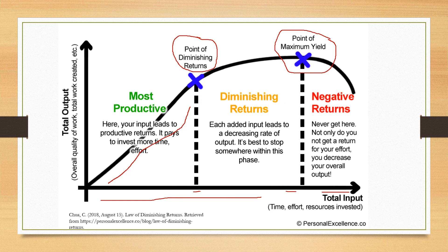This is a good way of tracking and understanding why all-nighters are really not that effective. Yes, if you need to get something done, you can kind of ignore the negative returns phase, because the achievement of completing something on time is basically what the output will track.